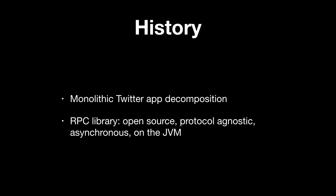Very briefly about history: years ago Twitter was built first as a monolithic Rails application and that didn't scale very well. At some point the decision was made to decompose it into individual services, and when you decompose into individual services you need something for these services to communicate — for that we needed an RPC library. There were strong requirements: it had to be open source, protocol agnostic (supporting HTTP, Thrift, Memcached), asynchronous for scale, and run on the JVM. Nothing really satisfied all of those requirements, and so that's how Finagle came to be.